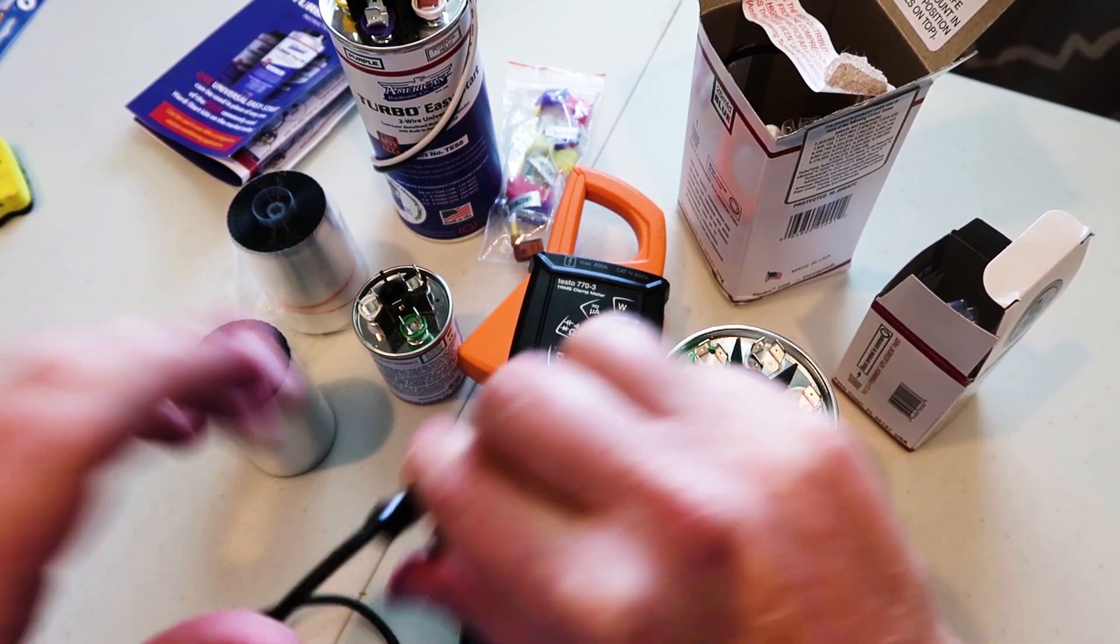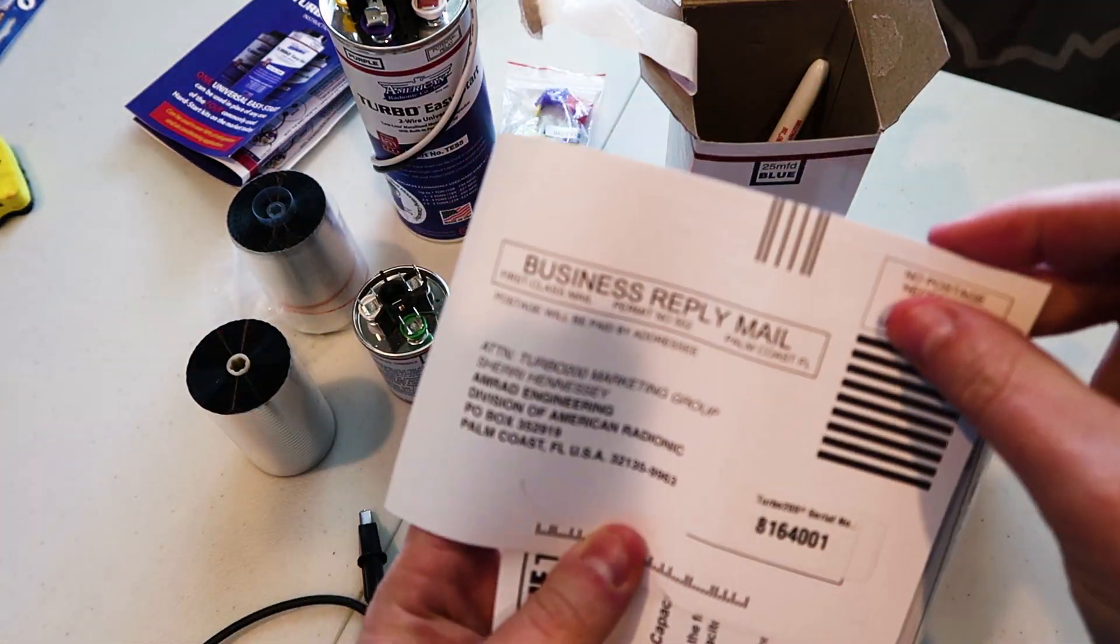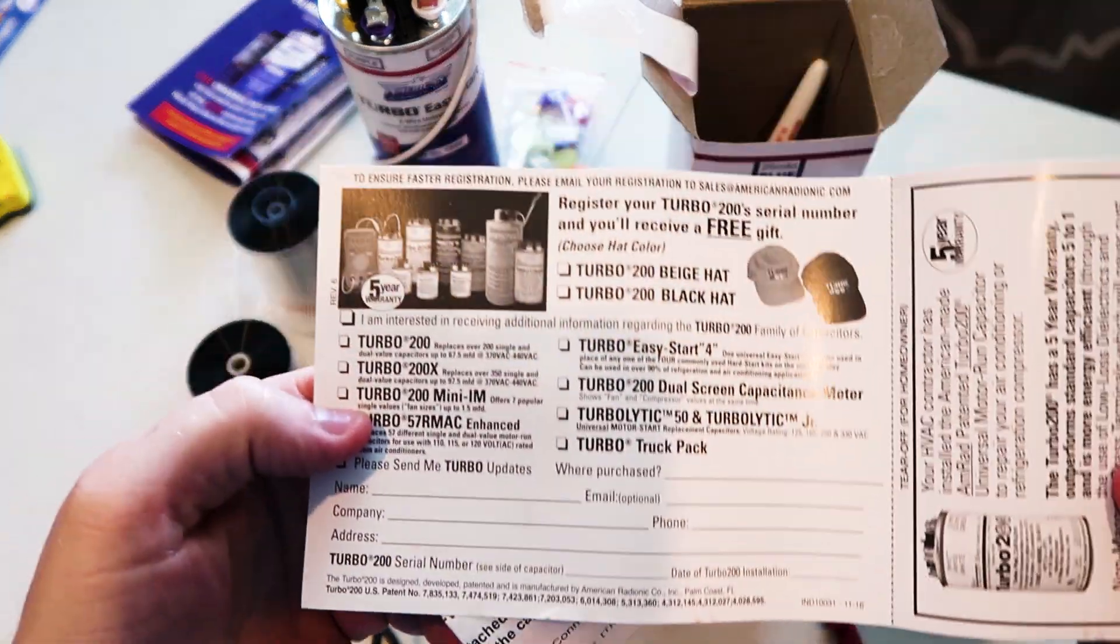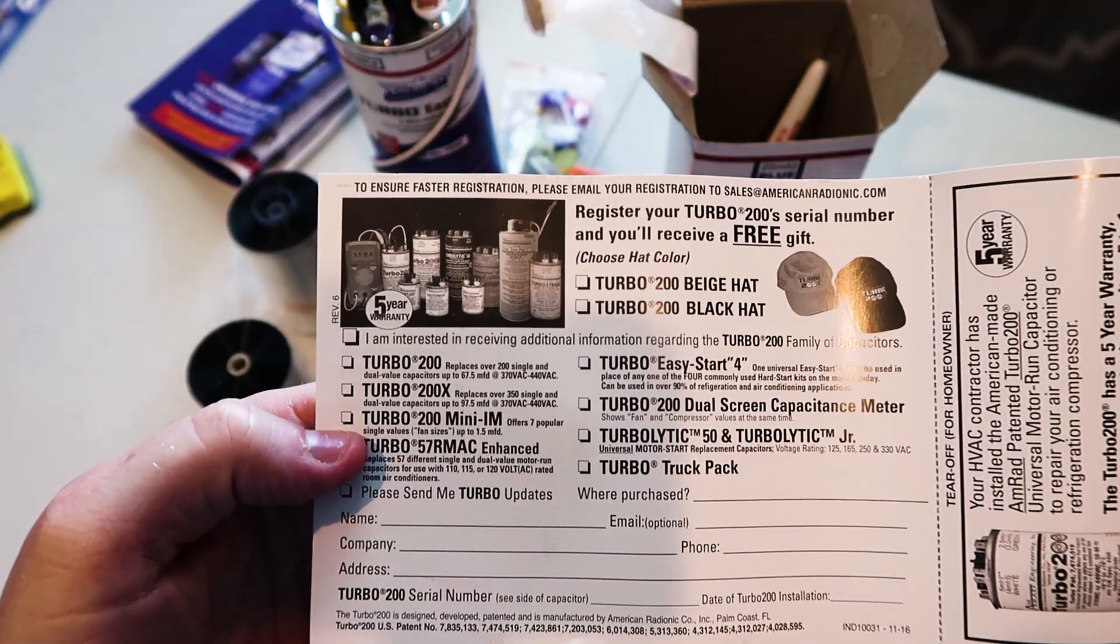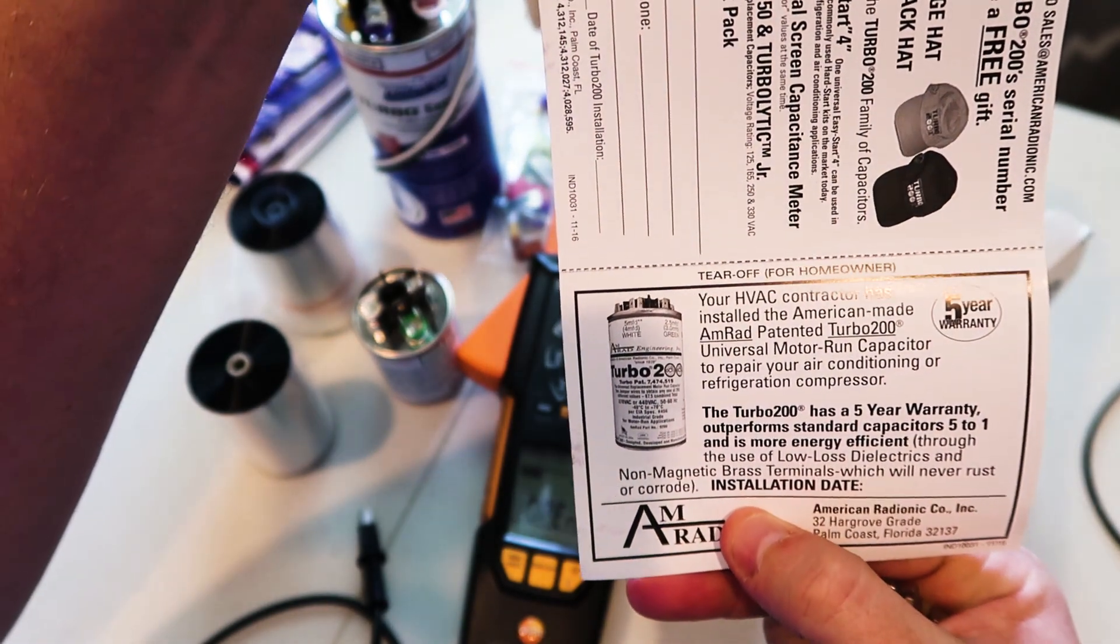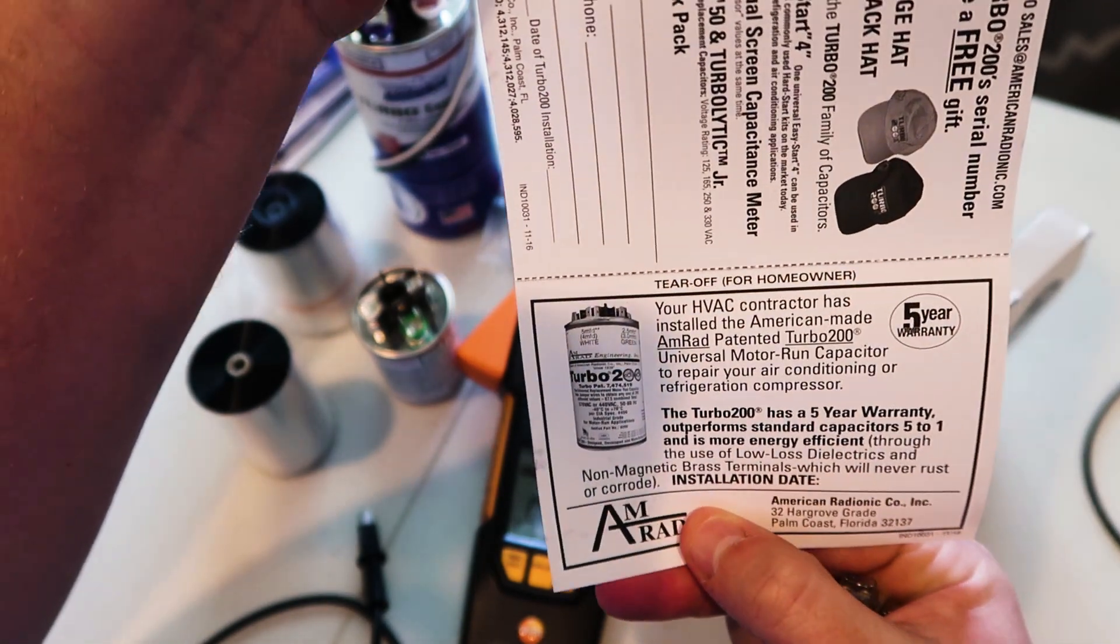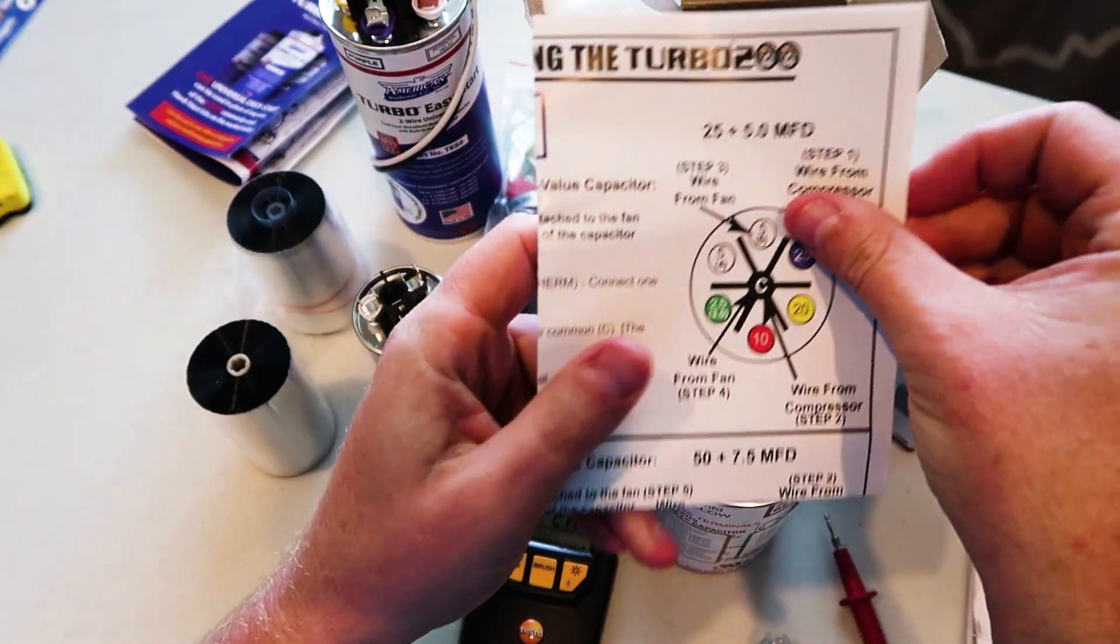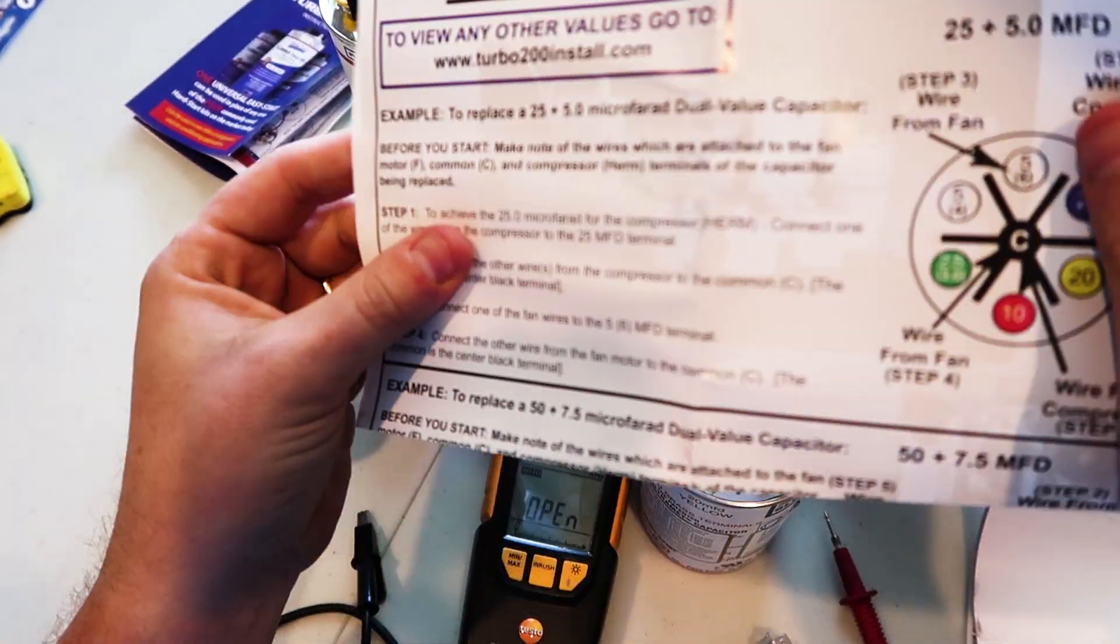All right, so now let's talk about how this actually works. You've got the business reply for registering the warranty. Go ahead and send that in. That helps them know where their products are going. And then that's also just sort of a way of getting it registered. You don't need to do it to register the warranty, but it's a nice way of getting it registered. And also Amrad wants to make sure that these are being installed by professional contractors. That's important to them. And that should be important to you as well.